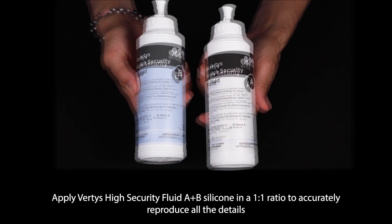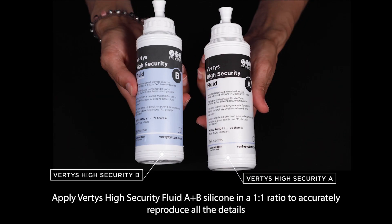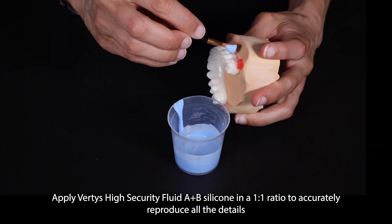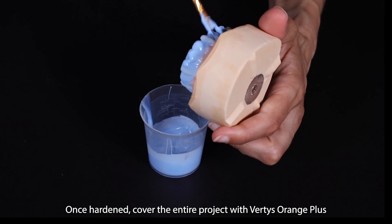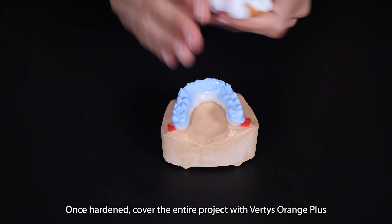Apply Vertis High Security Fluid A plus B silicone in a 1:1 ratio to accurately reproduce all the details. Brush all the teeth with a generous layer. Once hardened, cover the entire project with Vertis Orange Plus.